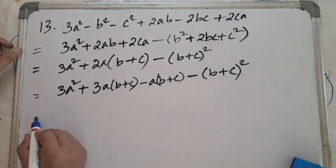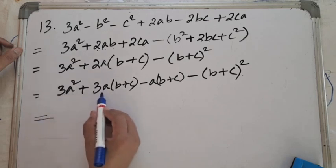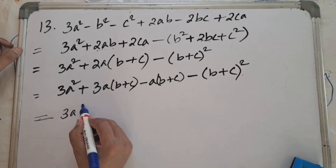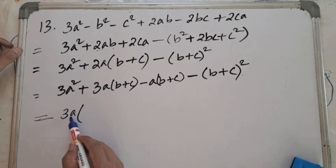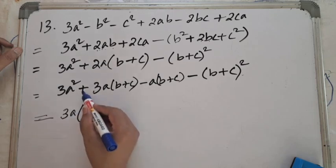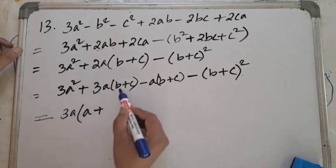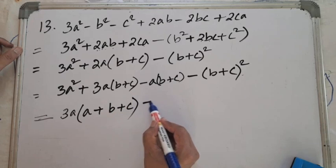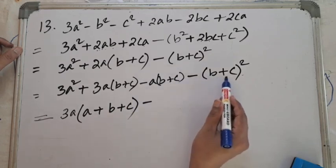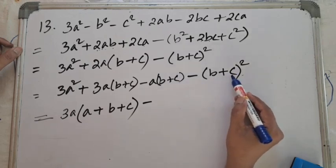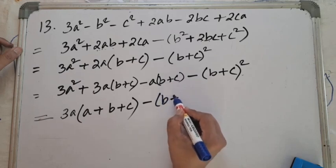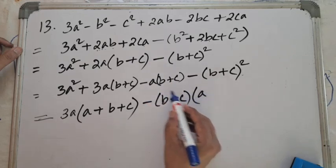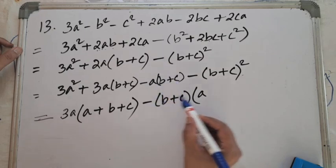From the first two terms 3a² + 3a(b+c), we take 3a as common. 3a is common in both, leaving a + (b+c) inside the bracket. So we get 3a[a + (b+c)] - (b+c)[a + (b+c)]. Here we can take (b+c) common from the last two terms: -a(b+c) - (b+c)², giving -(b+c)[a + (b+c)].